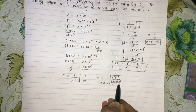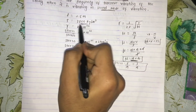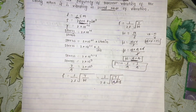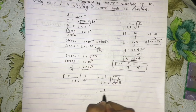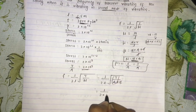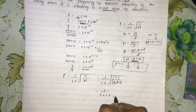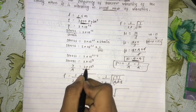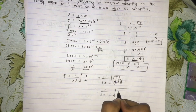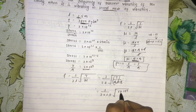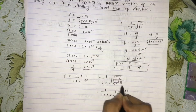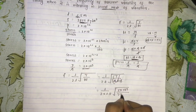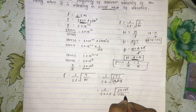T divided by area is the stress, which is 2 times 10 to the power 9. So f equals 1 by 2 times 1.5 times root of 2 times 10 to the power 9 divided by density. Density is 7800 kg per meter cube.